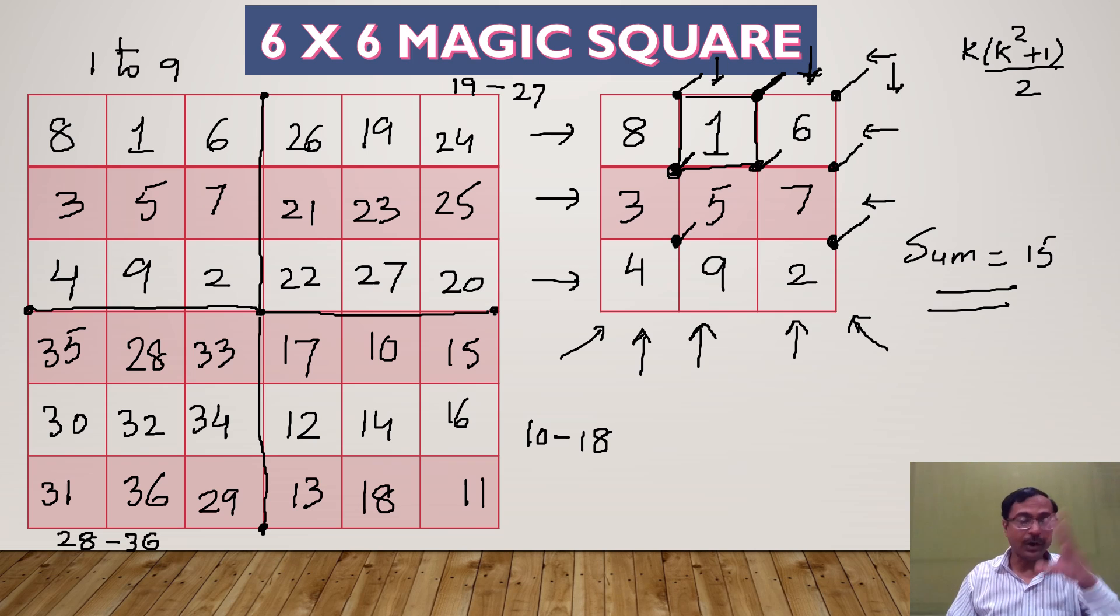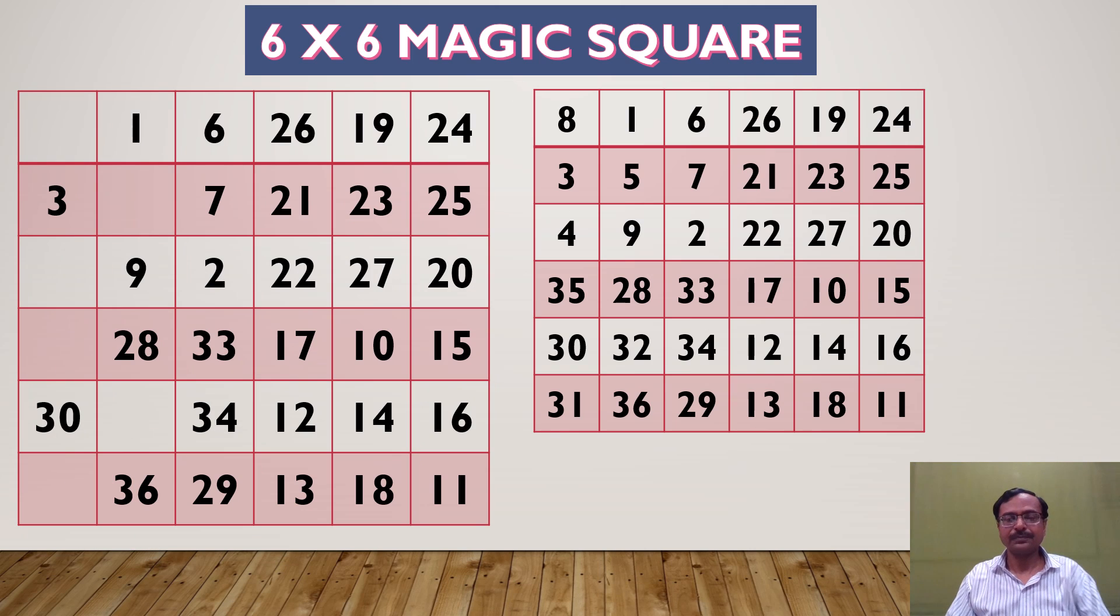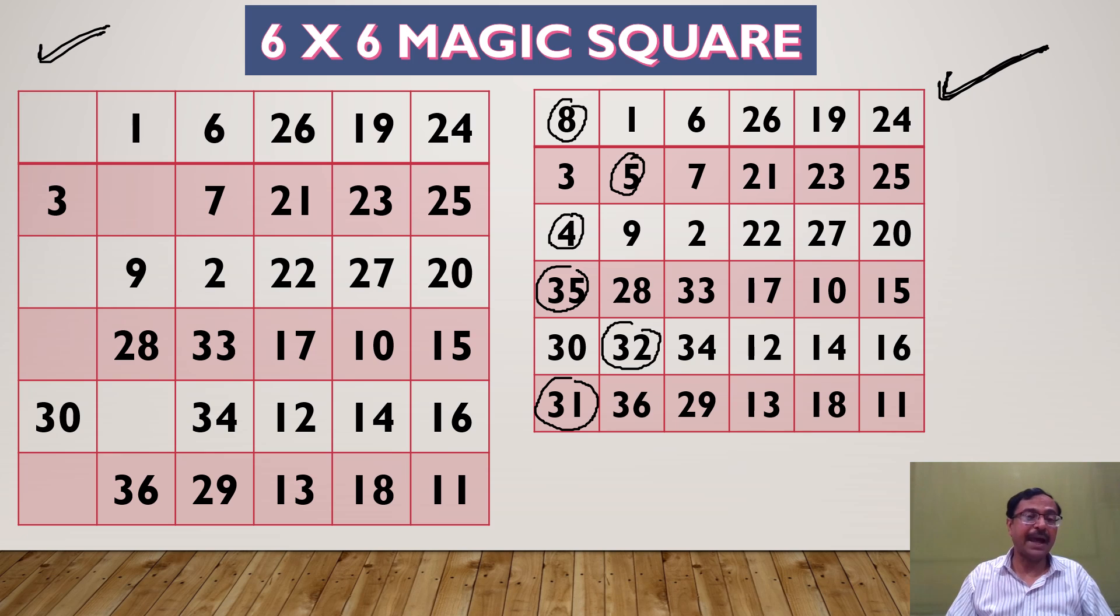Now you must be thinking we have a 6 by 6 magic square, but no, there is one more step left. What have we obtained now? This is the matrix we've obtained by filling all those 3 by 3 matrices, but what change is required to get the final 6 by 6 magic square? On the right side I have left some blanks - the numbers 8, 5, 4, 35, 32, and 31 are left blank on the left side.